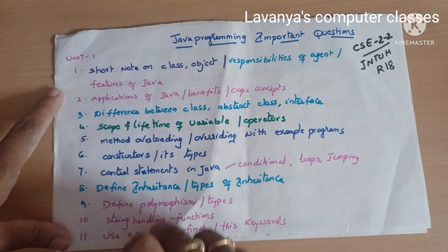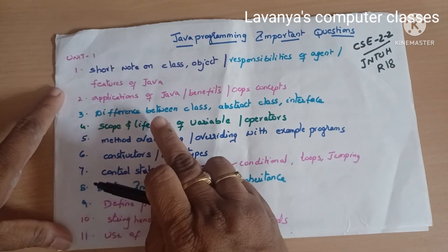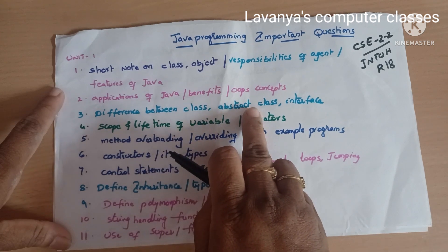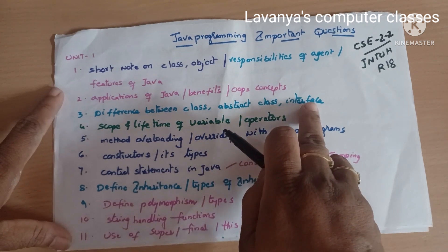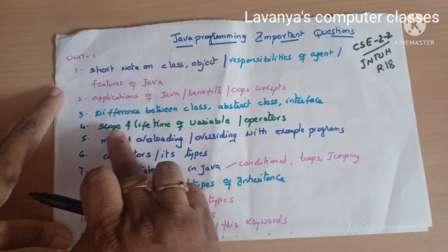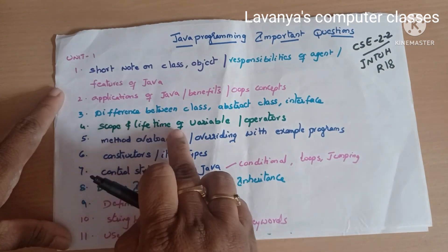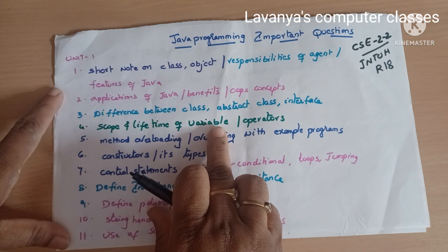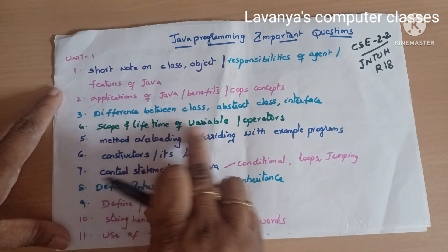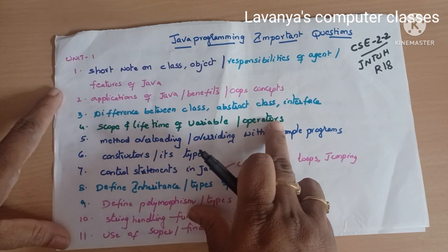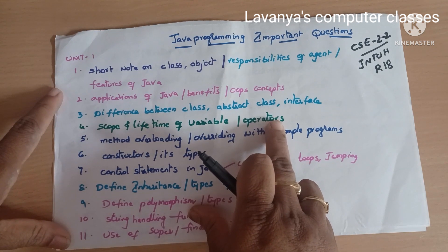The next important question is: differentiate between class, abstract class, and interfaces. After that, explain the scope and lifetime of variables — what is a variable, what are the different scopes, and operators in Java. Operators in C and C++ are the same as in Java, so read those once.